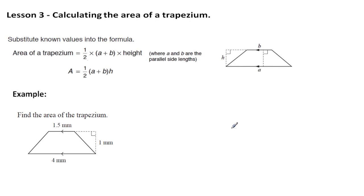In this lesson, we're going to look at the calculation of the area of a trapezium. If we study the shape of a trapezium, we have a quadrilateral, but the main thing to notice is that one pair of sides are parallel. As long as you've got just the one pair of sides being parallel, you have a trapezium.